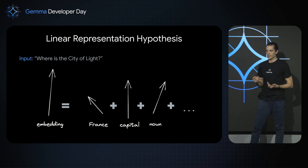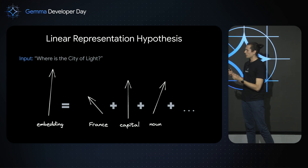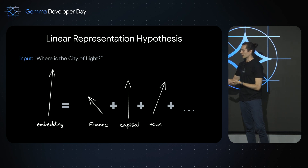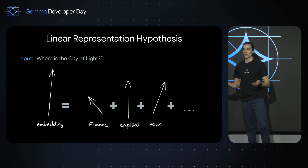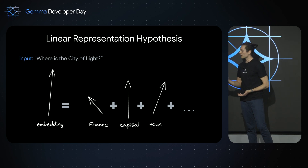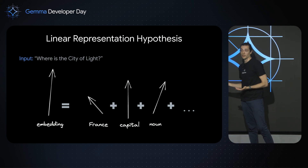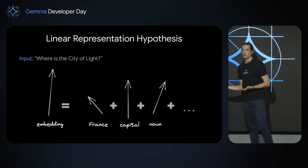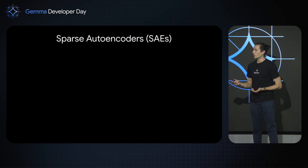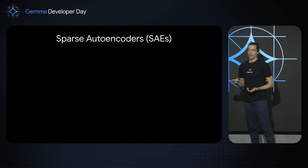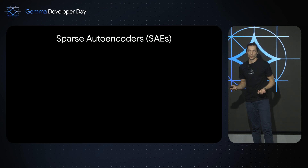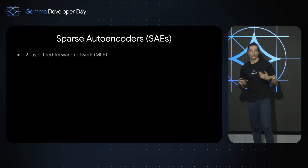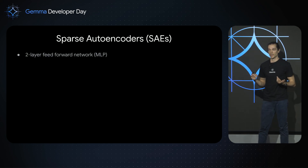So how do we disentangle this messy initial embedding vector into this neat sum of interpretable vectors, and how do we find these interpretable vectors in the first place? This is where sparse autoencoders come in. A sparse autoencoder, or SAE, is a simple two-layer feedforward network.